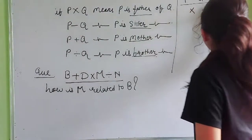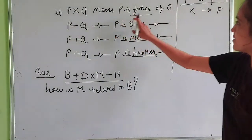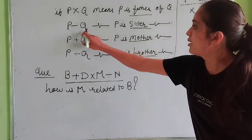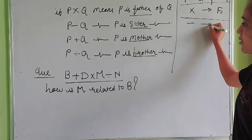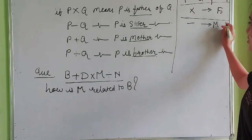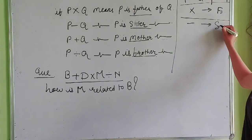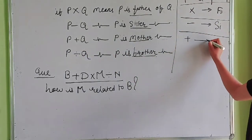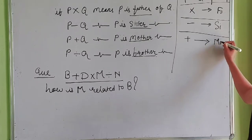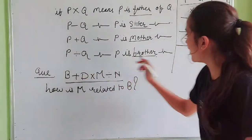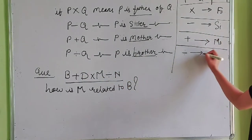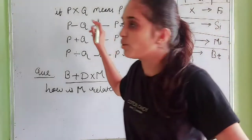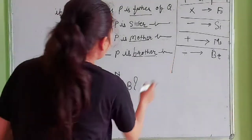So we are writing down the short forms. P × Q means P is father of Q — F for father. P − Q means P is sister — S. P + Q means P is mother — MO. P ÷ Q means P is brother — BR. So we have written down the nomenclature in short form.